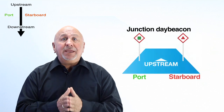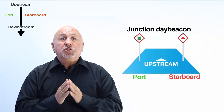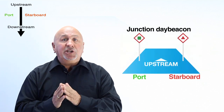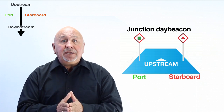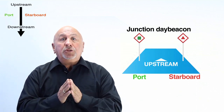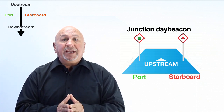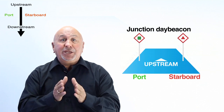A junction day beacon marks a point where the channel divides and may be passed on either side. It has a red diamond with either a green square or a red triangle inside, showing the main channel.